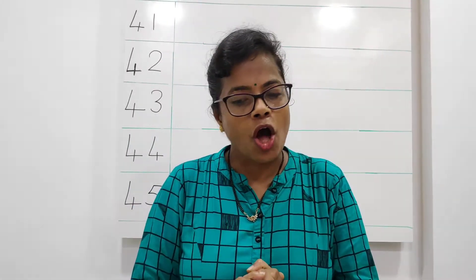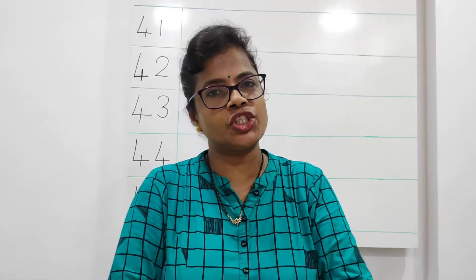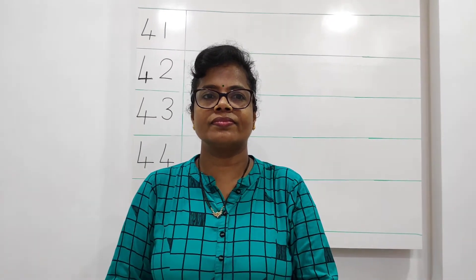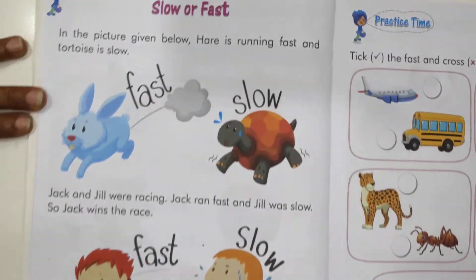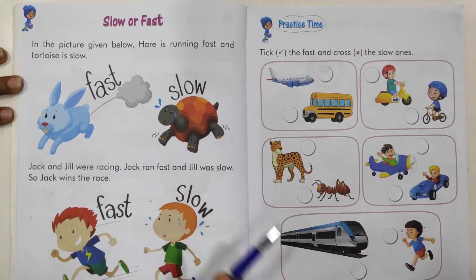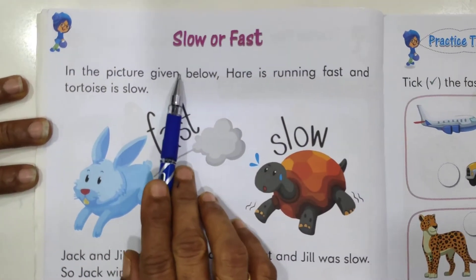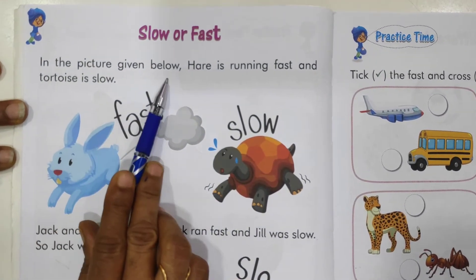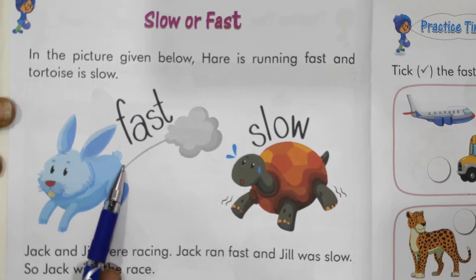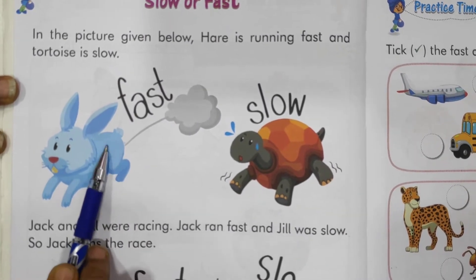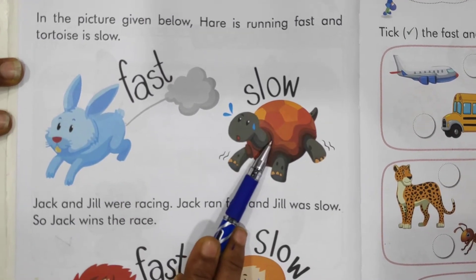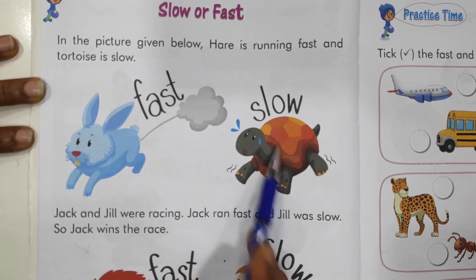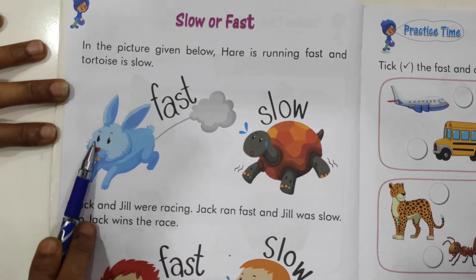Everyone bring your numeracy skill sheet book. Open pages 54 and 55. The topic is slow or fast. In the picture given below, hare is running fast, and tortoise runs very slow. Fast, slow.